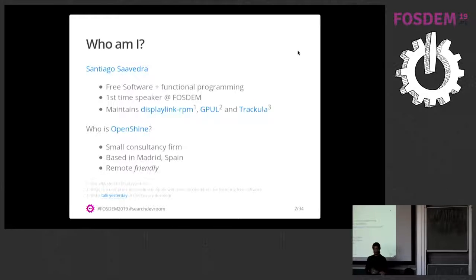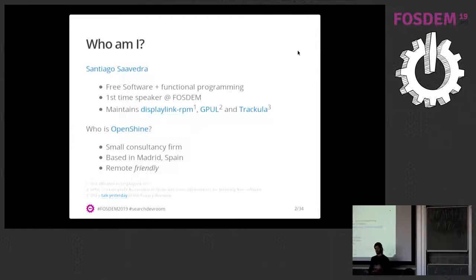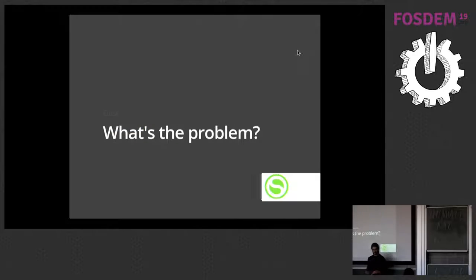I'm a free software and functional programming enthusiast, and I'm a maintainer of some projects in GitHub and also in the real world. Gepul is a non-profit we have in Spain in the northwest where we do fostering of free software. Dracula is a project for keeping privacy and educating about it. I'm working for OpenShine, who sponsored this work — a small consultancy firm based out of Madrid with some remote opportunities available.